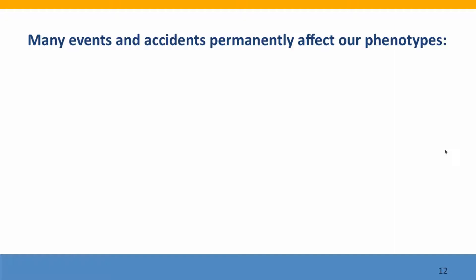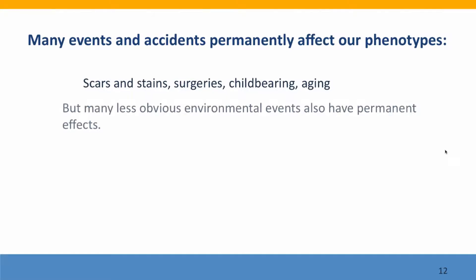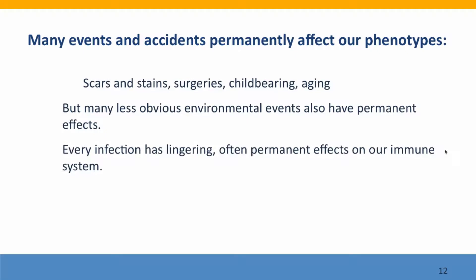It's easy to take for granted the effects of environment on our phenotypes and to forget about it when you're thinking about genetics. But of course, everything that happens to us affects our phenotype. We obviously think of things like scars and stains, surgeries, having children, getting old — these all obviously affect our phenotype — but there are lots of other factors as well. Every time we get an infection, it affects our immune system permanently.